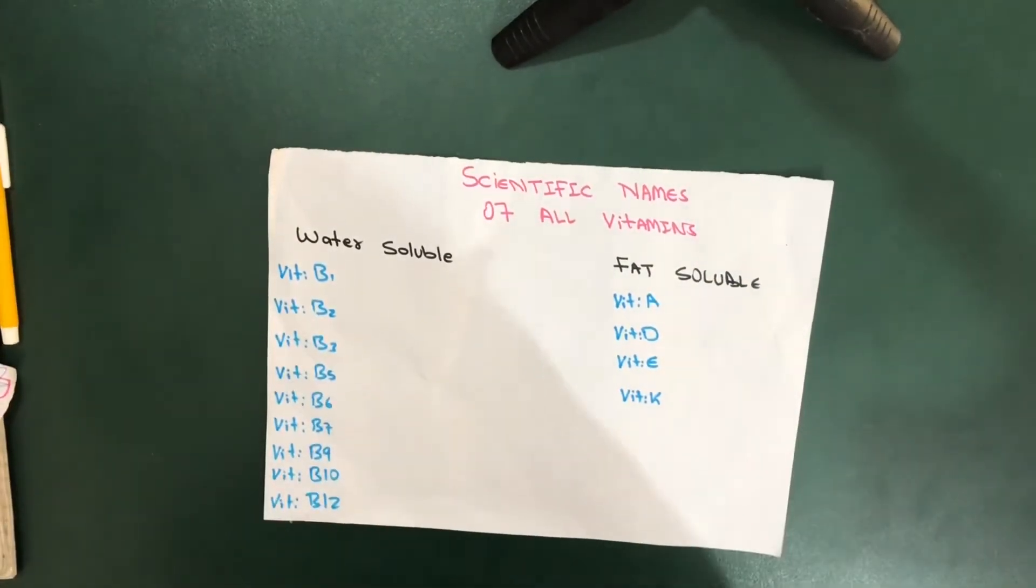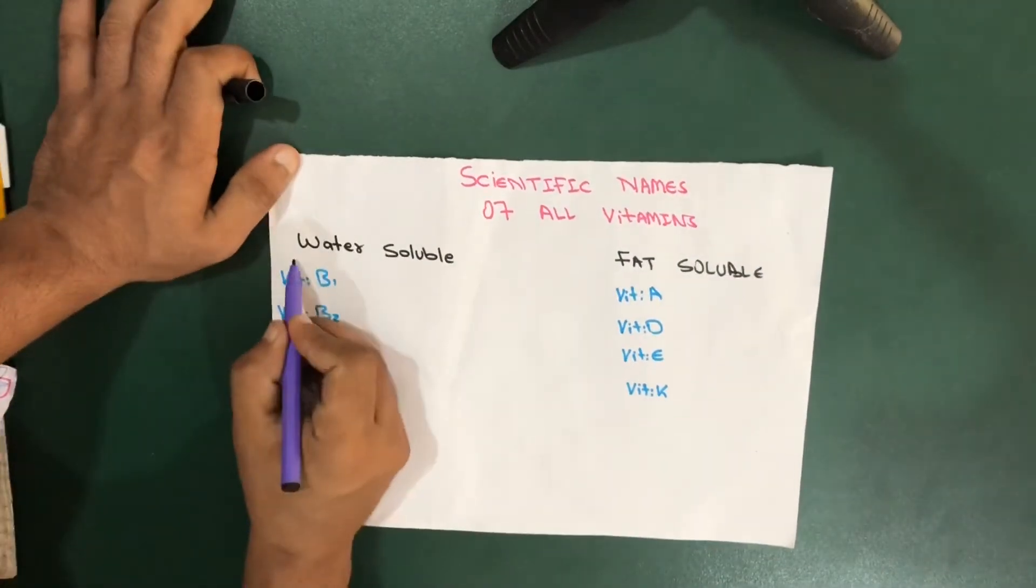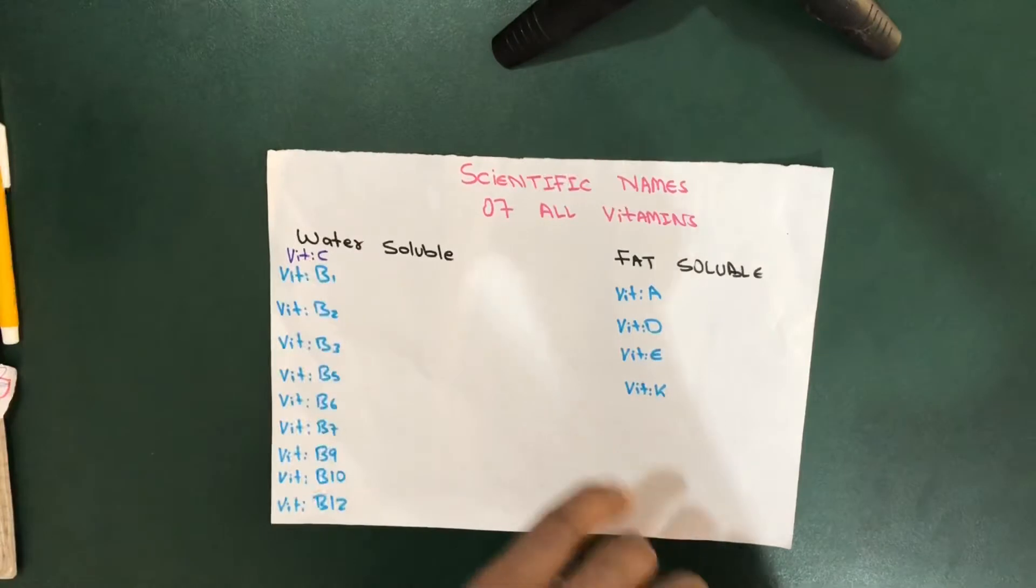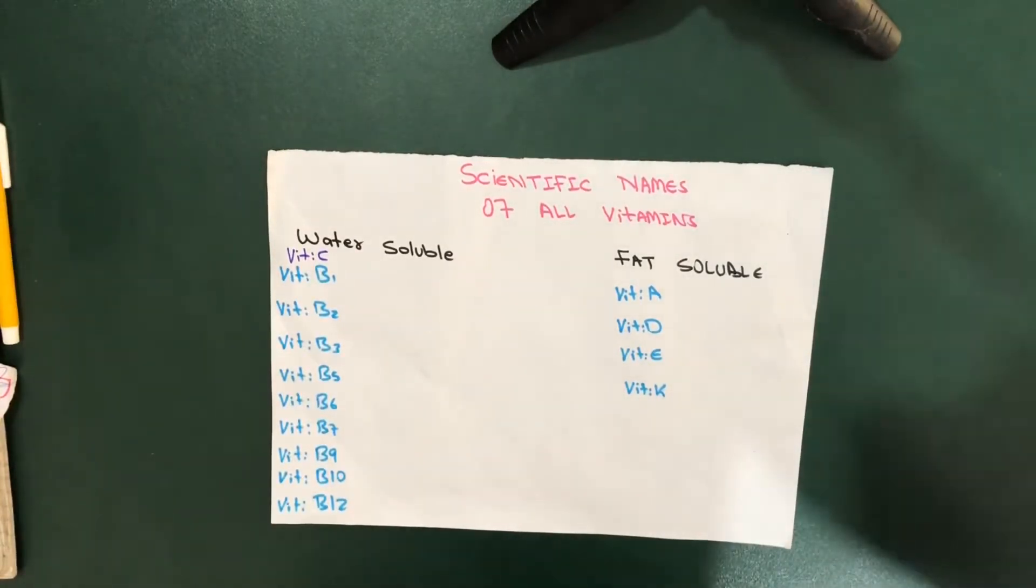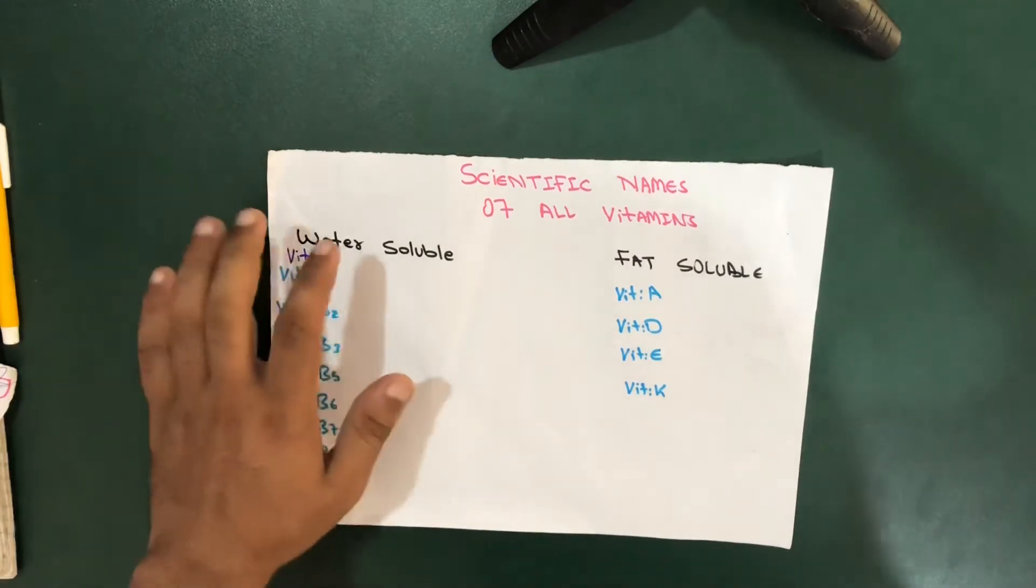These are the B complex, and we also have vitamin C. I haven't written it but it's vitamin C. So let's get started with the scientific names of each vitamin. Let's start with the fat soluble vitamins.